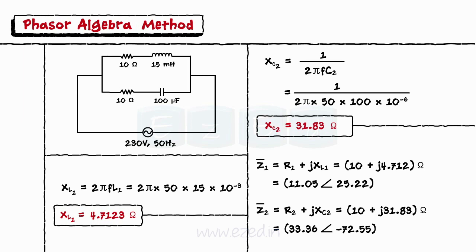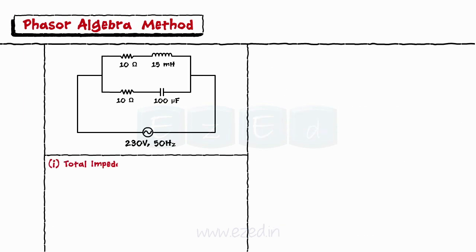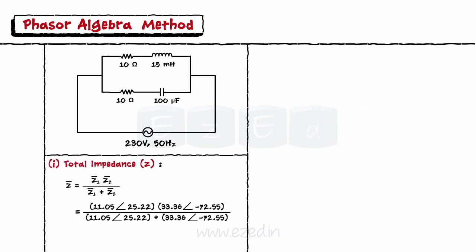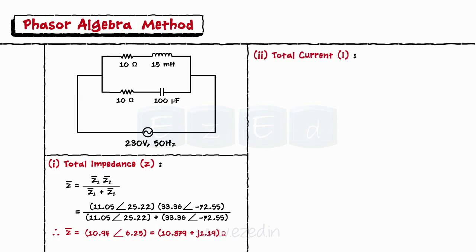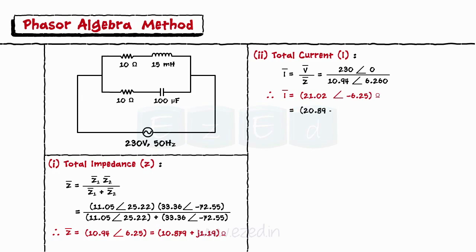Now, as the two impedances are in parallel, the equivalent impedance is calculated as the parallel combination of Z1 and Z2, which gives the value Z equals 10.94 angle 6.25°, equal to 10.879 plus 1.19j ohms. Thus the total current is calculated as the applied voltage divided by the total impedance, which gives I bar equals 21.02 angle −6.25°, equals 20.89 minus 2.28j amperes.